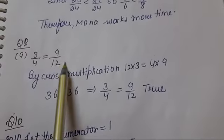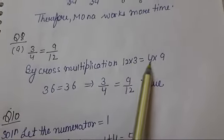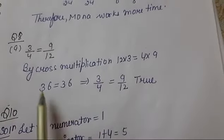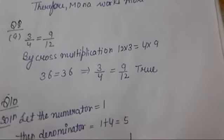Question number 8 is 3 upon 4 and 9 upon 12. By cross multiplication, 12 times 3 is 36, and 4 times 9 is 36. These are equal. That's why 3 upon 4 and 9 upon 12 are equal.